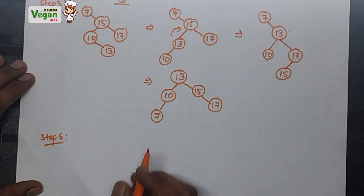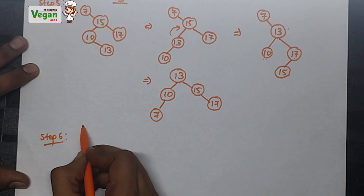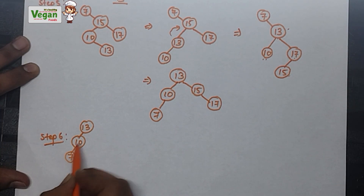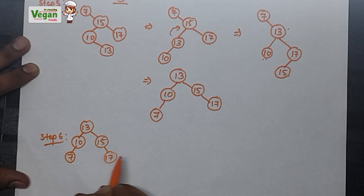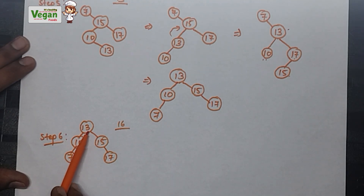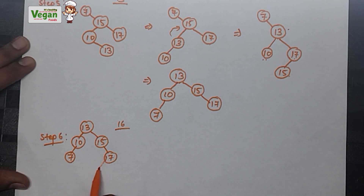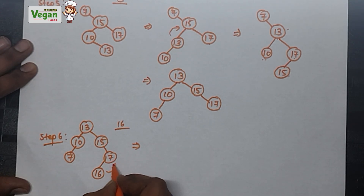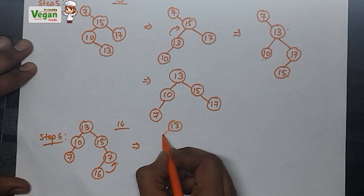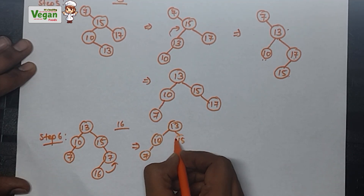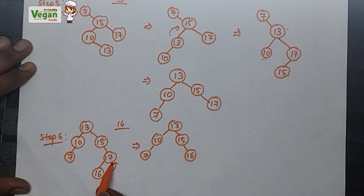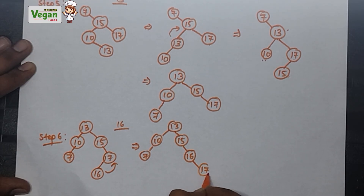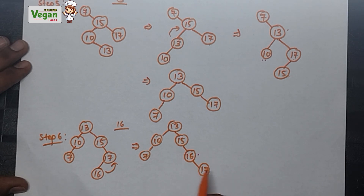Now only one element is left to insert: 16. Copy the tree: 13, 10, 7, 15, and 17. Inserting 16: compare with 13, 16 is greater so go right. Greater than 15, go right. Less than 17, go left. Now make this newly inserted 16 the root node level by level. It goes to replace 17: 13, 10, 7, 15 stay the same, 16 replaces 17. Compare 17 with 16: 17 is greater than 16, so 17 goes here.